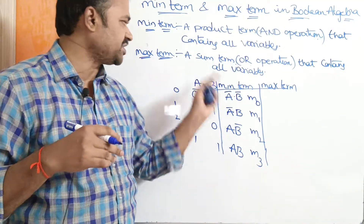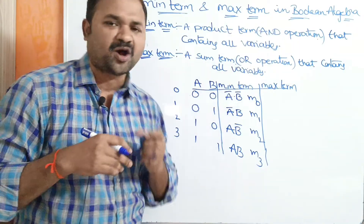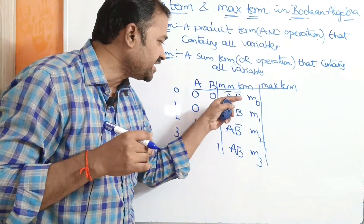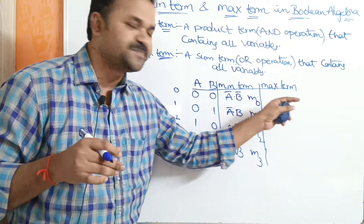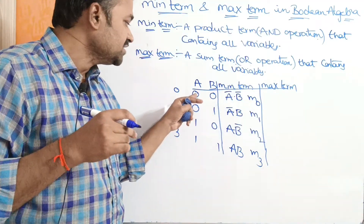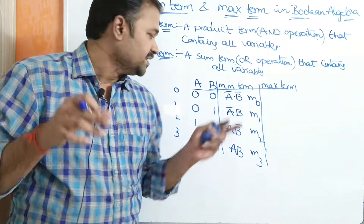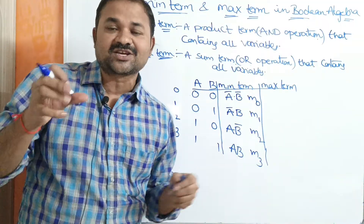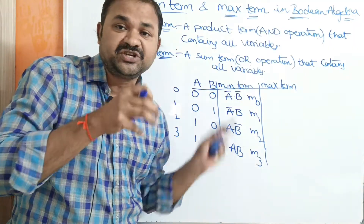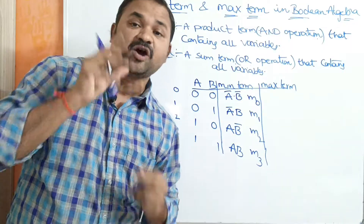Now let us see what is a maxterm. A maxterm means a sum term — we need to perform OR operation that contains all the variables. In a minterm we perform product operation, whereas in a maxterm we perform sum operation. In a maxterm, 0 is considered as that variable, whereas 1 is considered as the complement of that variable.